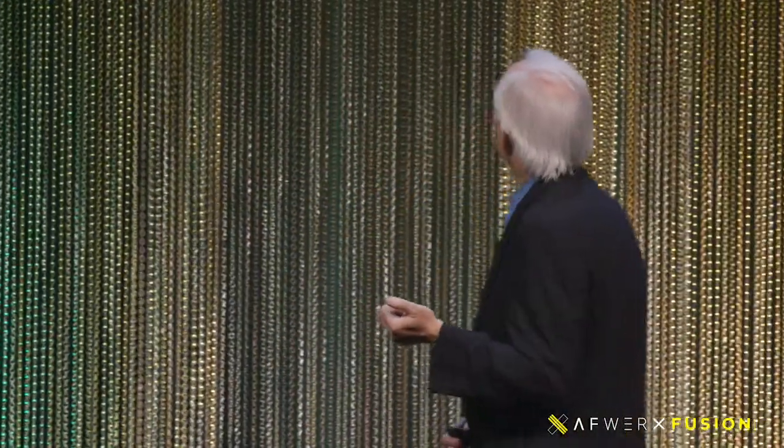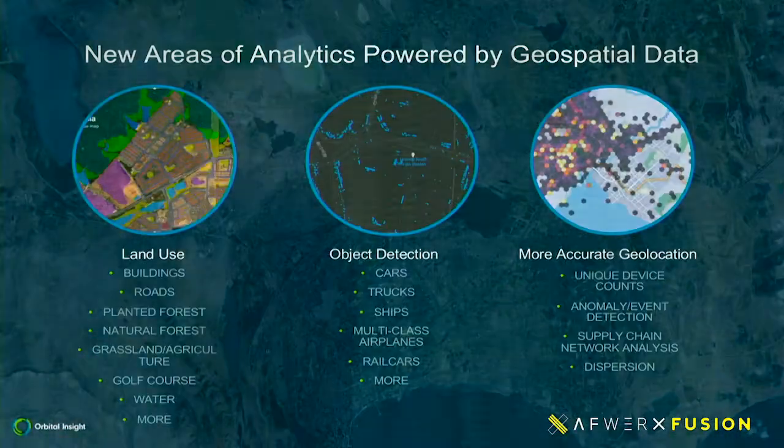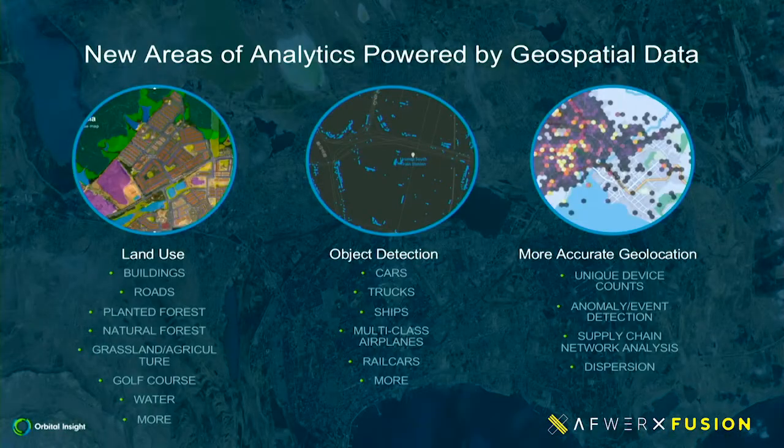The third area is other kinds of geolocation — the cell phone counts, the AIS data, the connected car data.